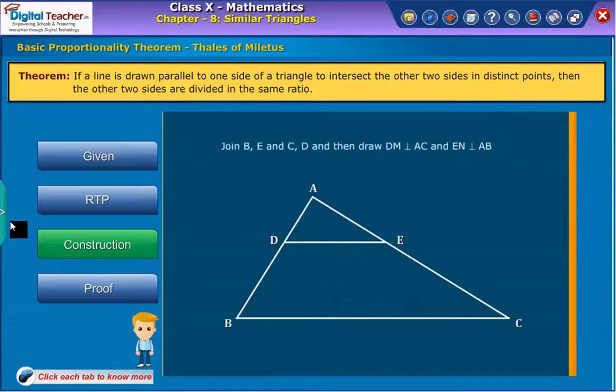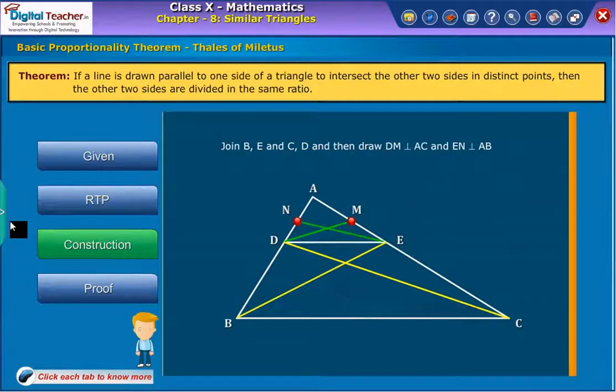Construction: Join BE and CD and draw DM perpendicular to AC and EN perpendicular to AB as shown.